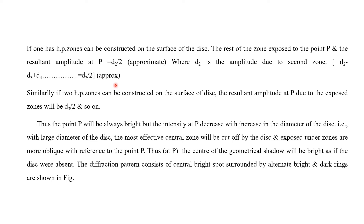Similarly, if two half-period zones are covered, the resultant amplitude at point P will be D3 by 2, and so on. The point P will be bright, though the intensity decreases as the diameter of the disk increases.